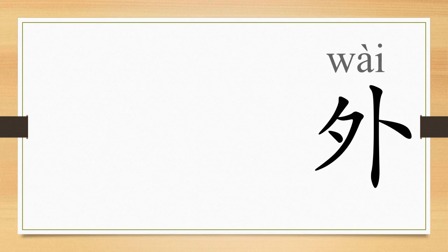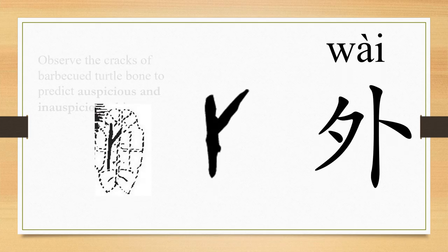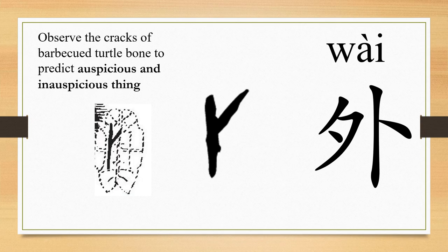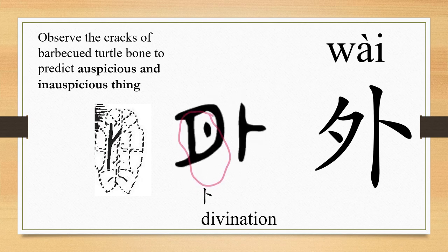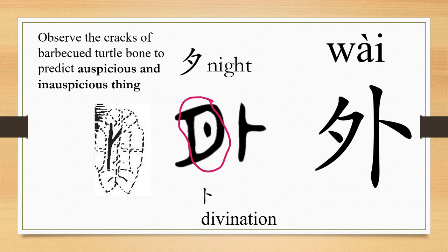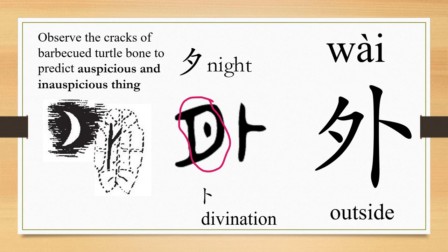The character wai evolves from the image of the cracks of the oracle bone, which are used to predict for people in ancient China. So wai has the same ancient Chinese writing with bu, which means divination. And then the writing changes with one more radical, that is, xi, which means night. And it is said that the divination must be taking place in daytime. So it will be very unusual or exceptional to have the divination in night. So wai has the meaning of unusual, exceptional, and then extends to the meaning outside.